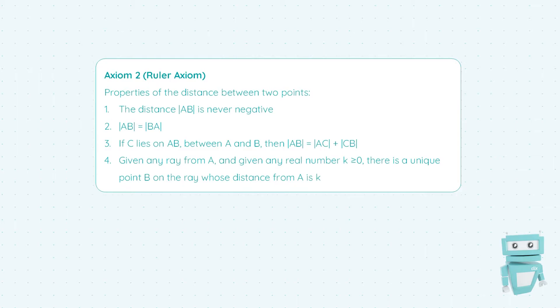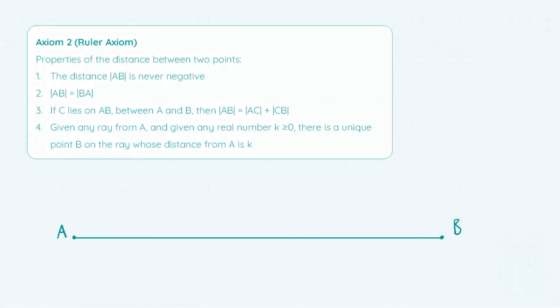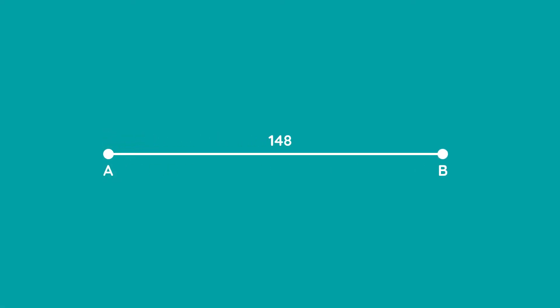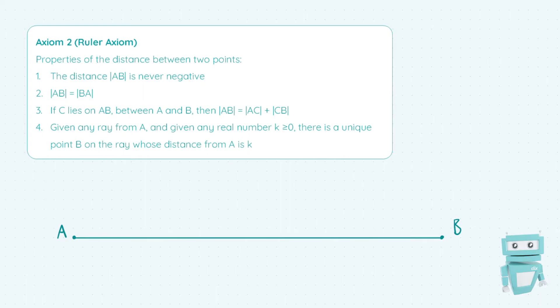The properties of the distance between two points: first of all, the distance |AB| is never negative, which just means that the distance of a line can never be a negative number - fairly intuitive, nothing too surprising about that.